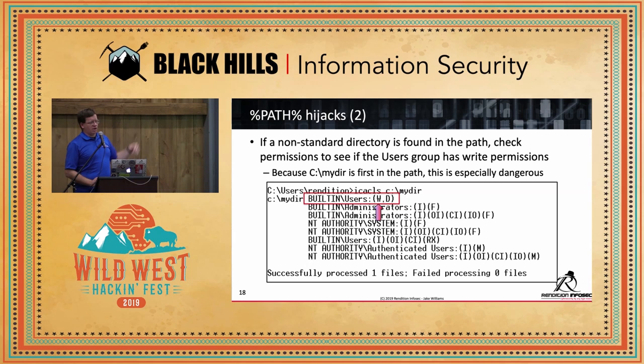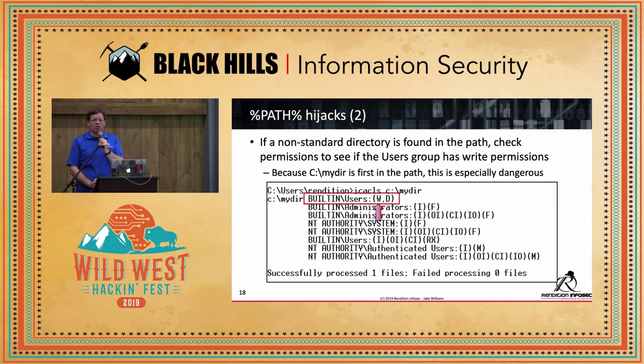So TLDR and MITRE, then pop back over and use iCACLS. If we find a non-standard directory, check the permissions. Notice here I've got a second set of permissions. Before I said WD and AD were the ones I cared about — those are on the special permissions side. Here I just have write access to the directory, so it's game on — we have write access to a path.